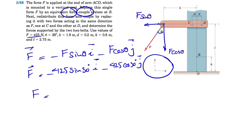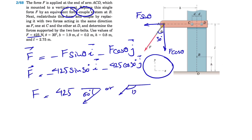There is another way to show force F: using its magnitude and the angles it makes with the horizontal. We can show it as 90 minus 30 = 60 degrees, or equivalently 120 degrees — both representations work.